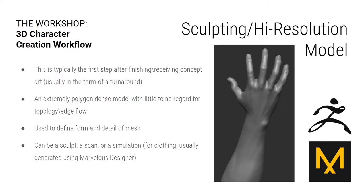Typically when you start a character — or pretty much doing whatever, a creature or something like that — you usually start with some kind of sculpt or high-resolution model. This is typically after you receive a concept, usually in the form of a turnaround, just so you can get an idea of the shape and form without any real regard for the topology or edge flow. It's purely an artistic process.